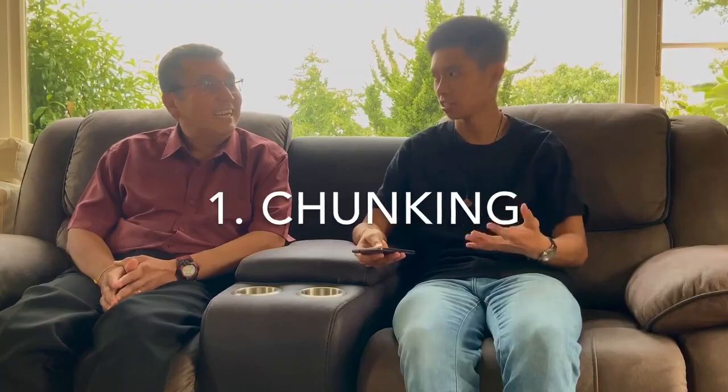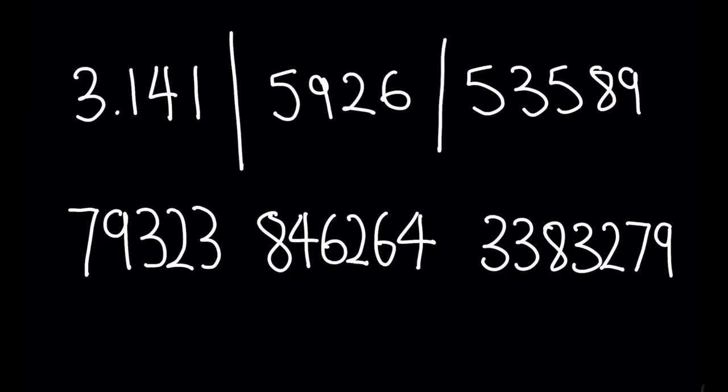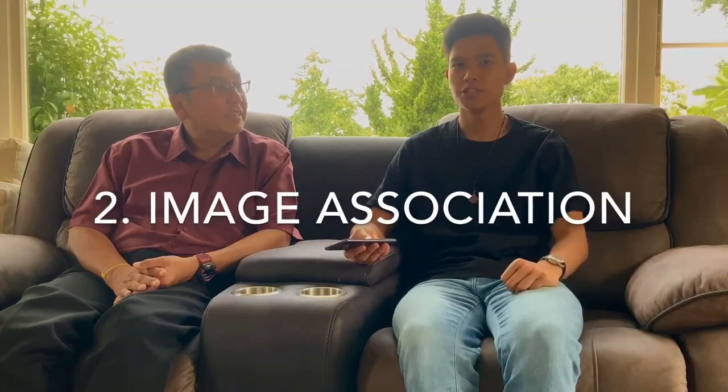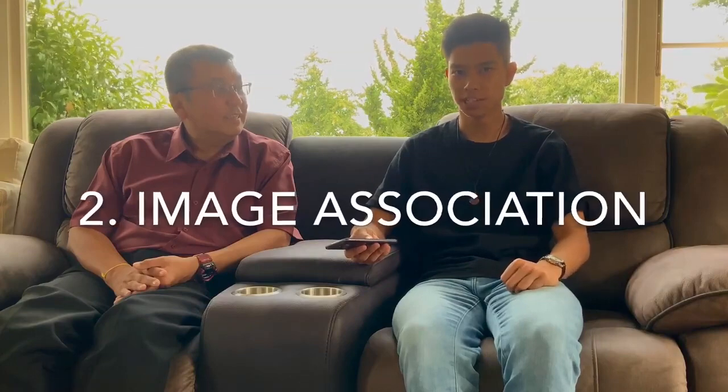Could you please elaborate on chunking? There are altogether like 40 or 50 numbers. What I did is that I break them down into different parts — they could be four, five, or six. So that covers number two: image association.